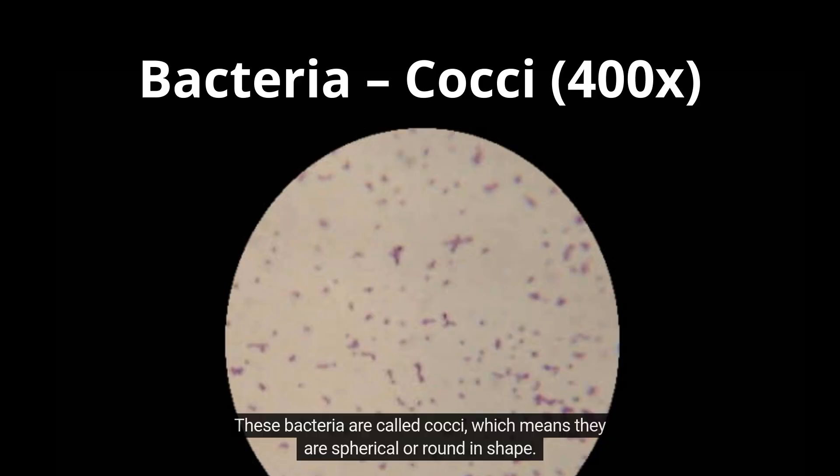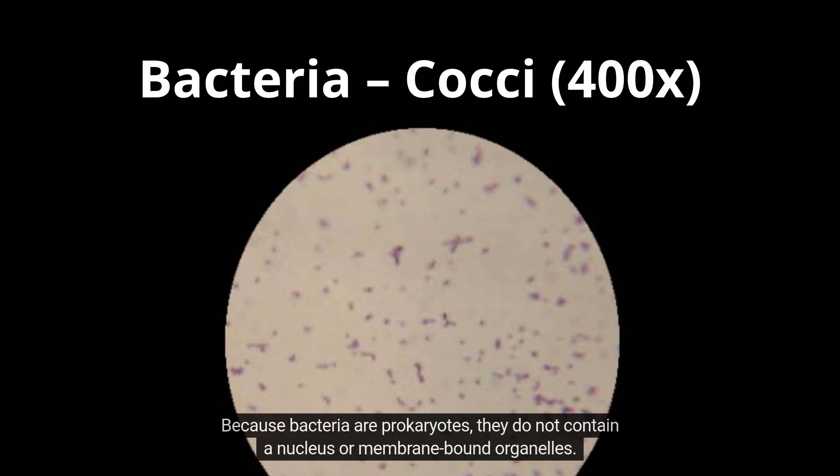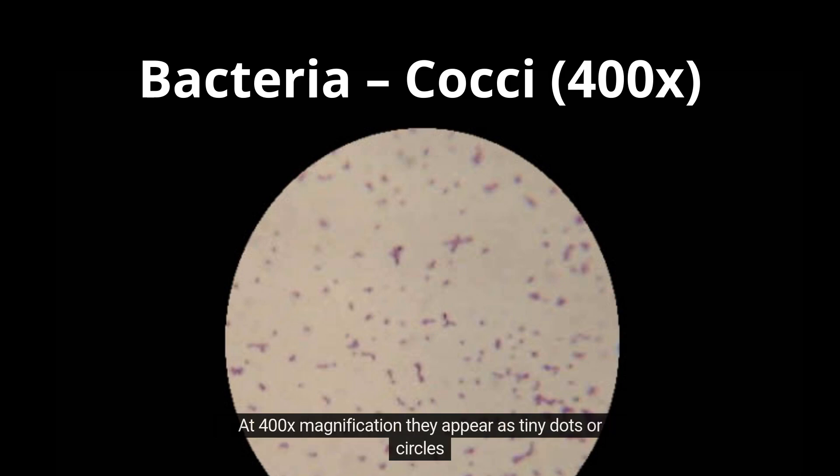These bacteria are called cocci, which means they are spherical or round in shape. Cocci may appear singly, in pairs, in chains, or in clusters depending on the species. Because bacteria are prokaryotes, they do not contain a nucleus or membrane-bound organelles. At 400x magnification, they appear as tiny dots or circles.